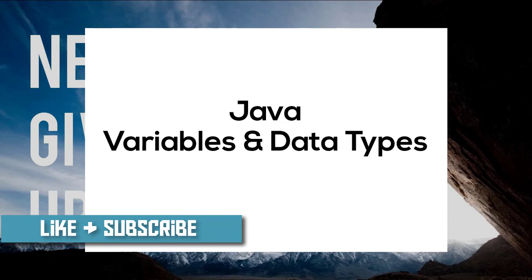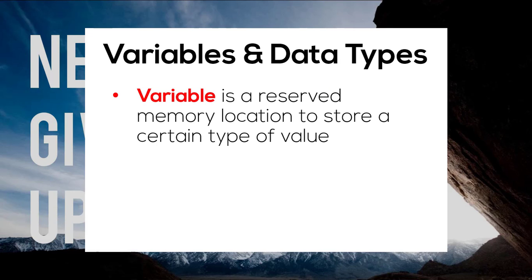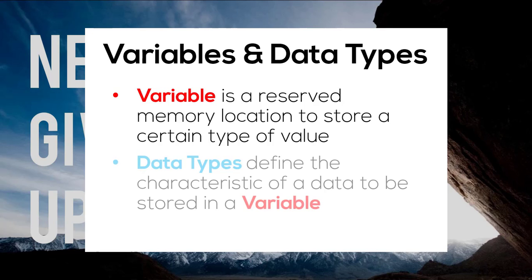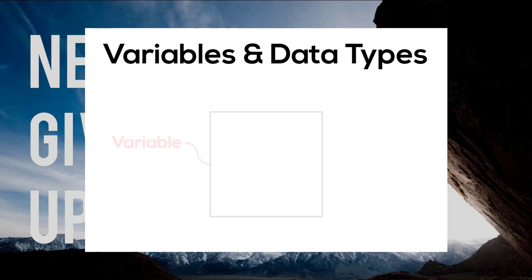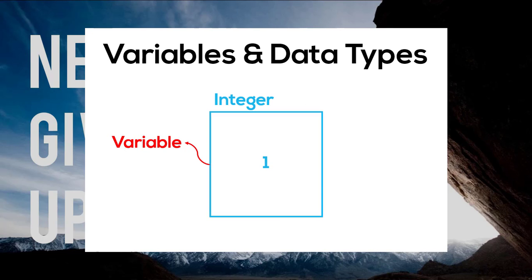So first thing first, what is a Java variable and data type? A variable is basically a reserved memory location to store a certain type of value, and every variable must be assigned to a data type that defines the characteristic of the data to be stored. In other words, we can think of a variable as a container that holds a value while the application is running, and the data type informs the compiler about the type of value being stored — which could be an integer, double, character, and so on.